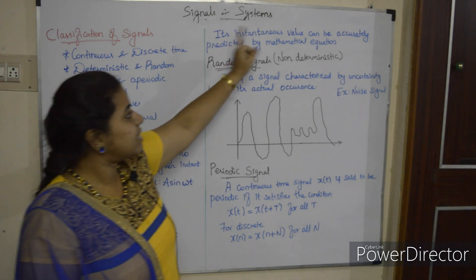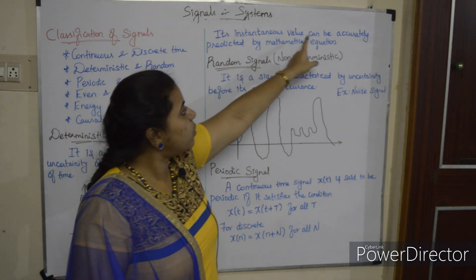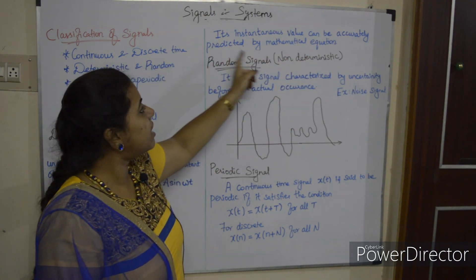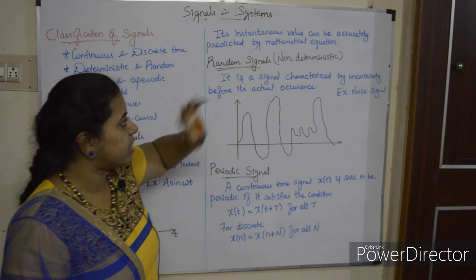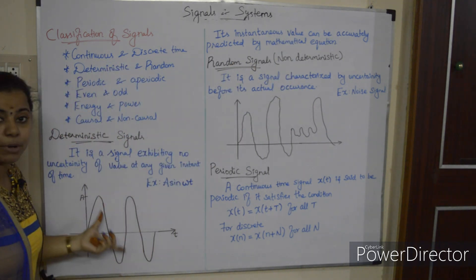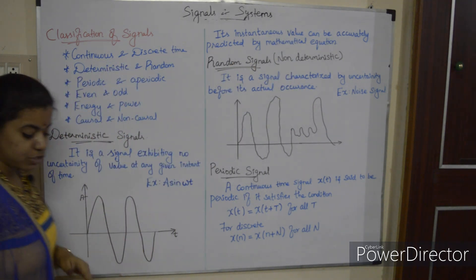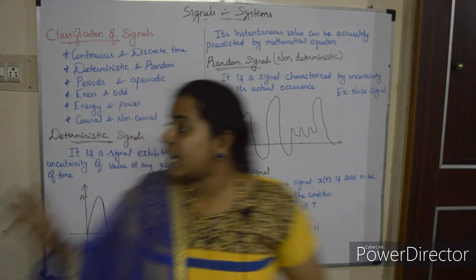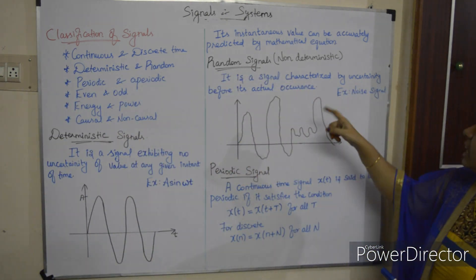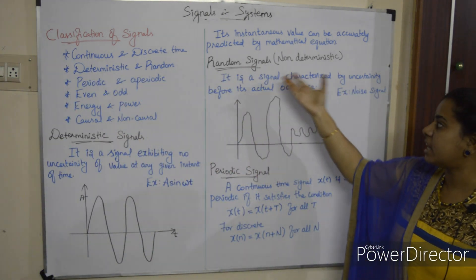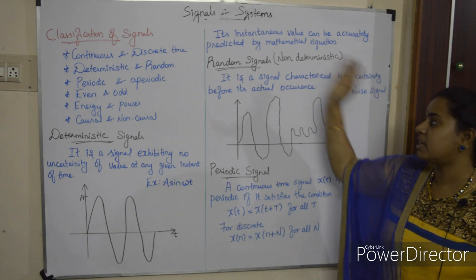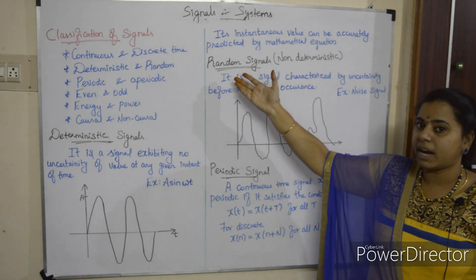Its instantaneous value can be accurately predicted by a mathematical equation. Whereas in a random signal, it is non-deterministic. Another name for a non-deterministic signal is a random signal.